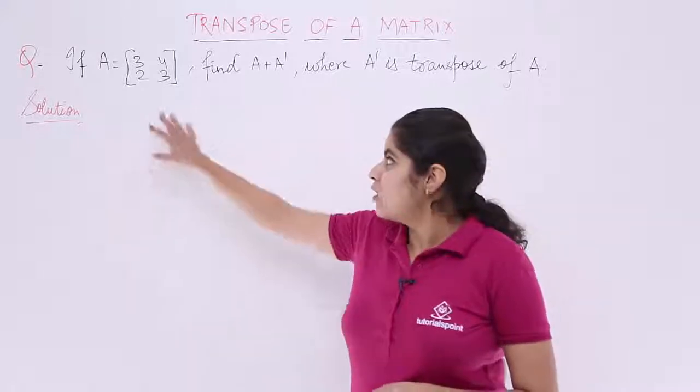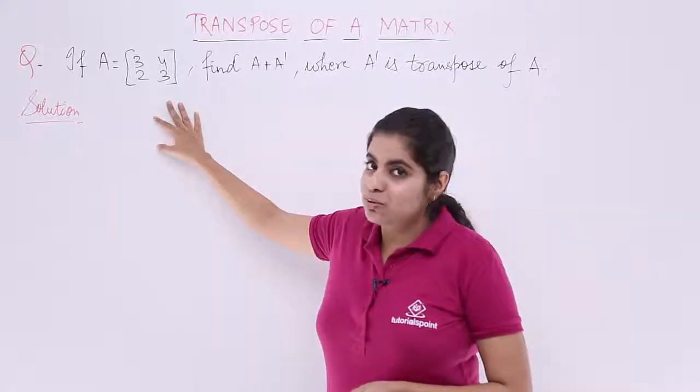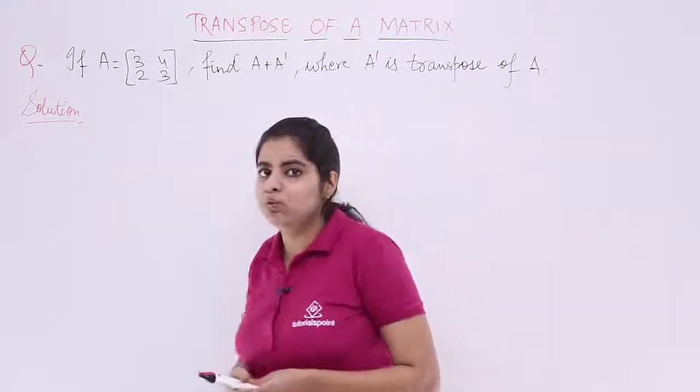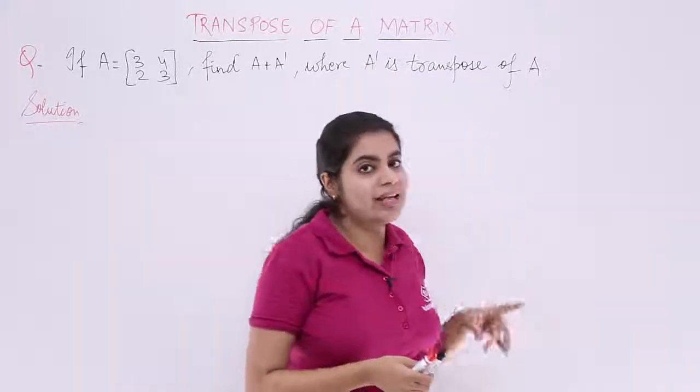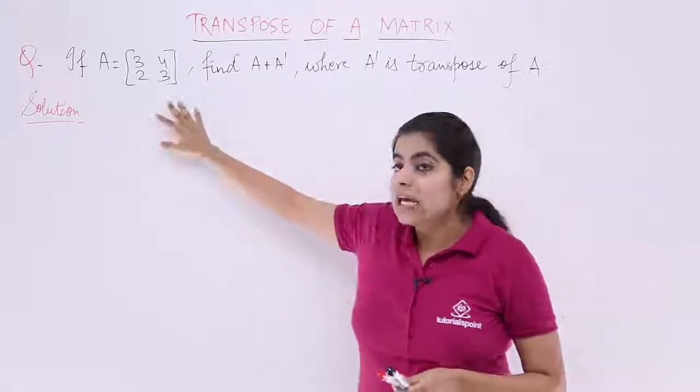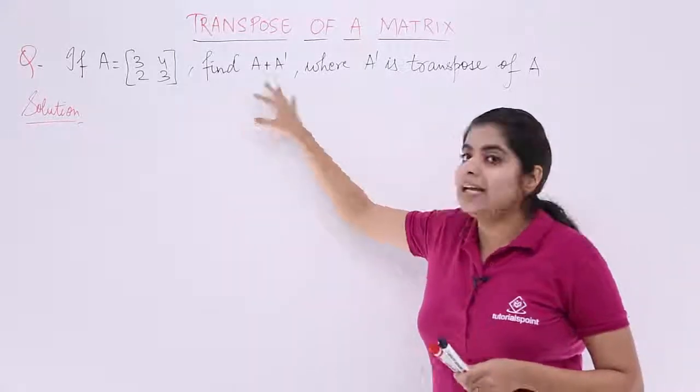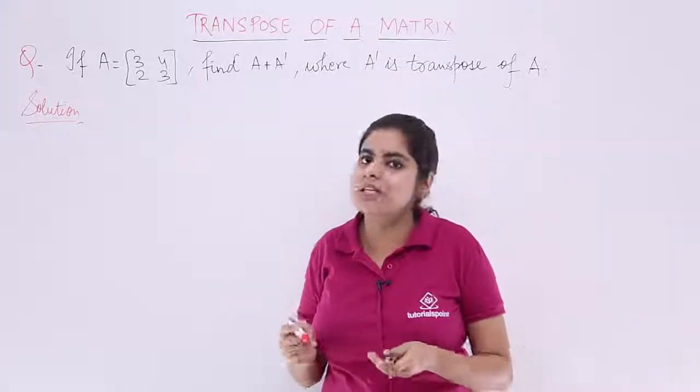The problem says that if A is a given matrix of 2 by 2 order, find the value of A plus A', where A' is the transpose of A. I again repeat, if A is the given matrix, find A plus A'. The question is very simple.